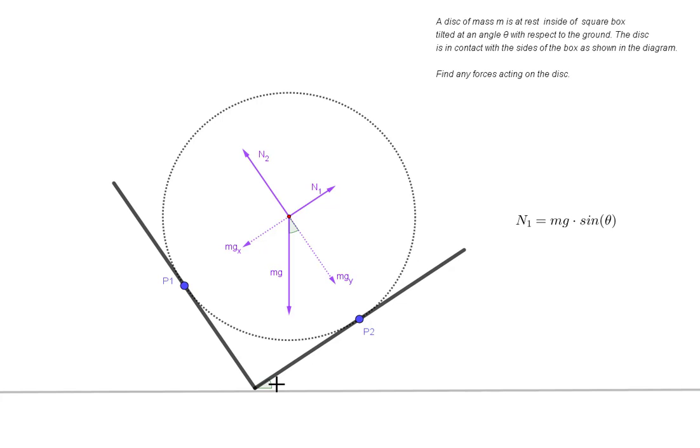And first of all, you should convince yourself, if you're not already convinced, that this actually is the answer. Because for example, if you move mgx over here, which is just vector addition, then you'll see that the sine of this angle equals mgx over mg. And so mgx simply equals mg times sine theta. Now we want to find n2 in terms of mgy or mg.